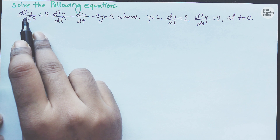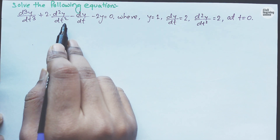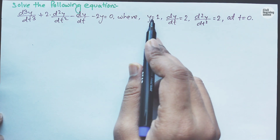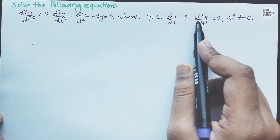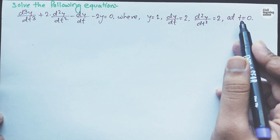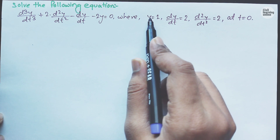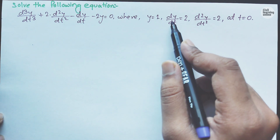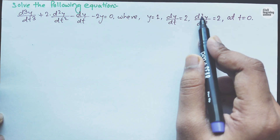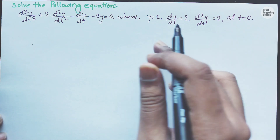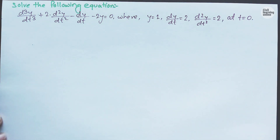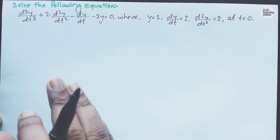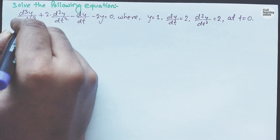The question is: d³y/dt³ + 2·d²y/dt² − dy/dt − 2y = 0, where y(0) = 1, dy/dt at t=0 equals 2, and d²y/dt² at t=0 equals 2. We are given these initial values and will use them in the equation. Let's solve using Laplace transformation — our first step is to take Laplace transformation on both sides.